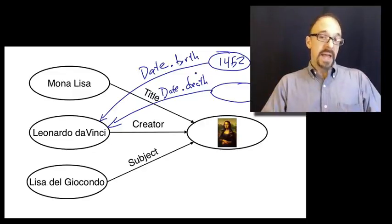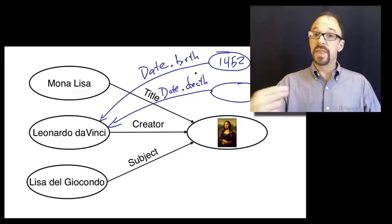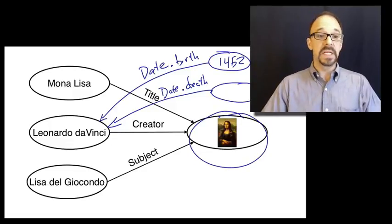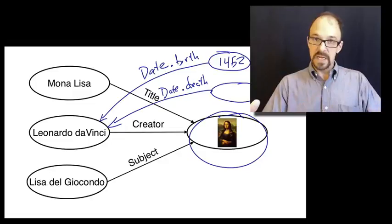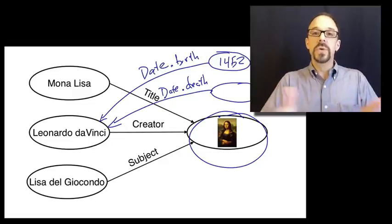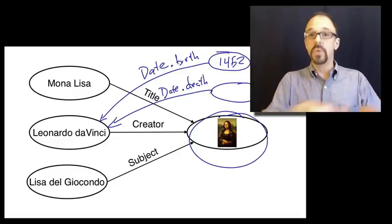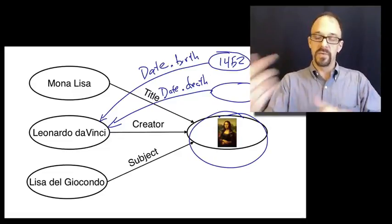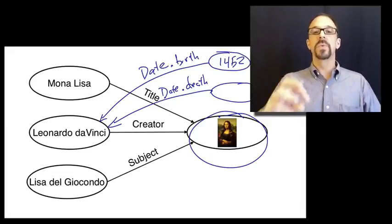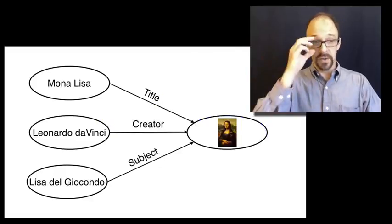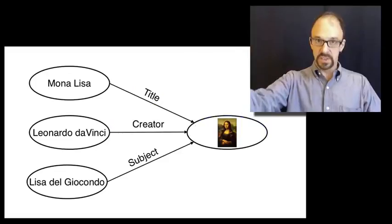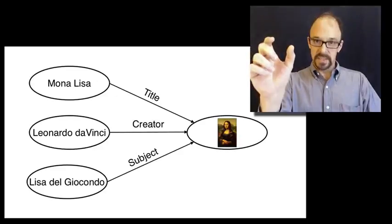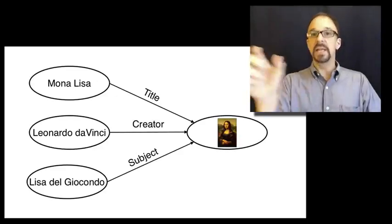The fact that you can have multiple triples with the same object, as is the case here with the Mona Lisa, plays out in the dumb-down and repeatability principles in Dublin Core. You use whatever elements you need to describe a resource, and you don't use the ones you don't need. And you can use elements as many times as you want with different associated values to them. So, to reiterate all of this in metadata terms, the object is the resource being described by the metadata record. The predicate is an element in that record, and the subject is the value assigned to that element.